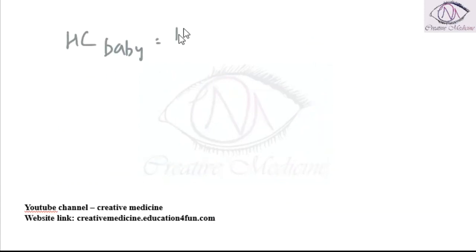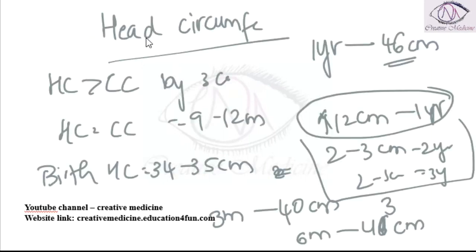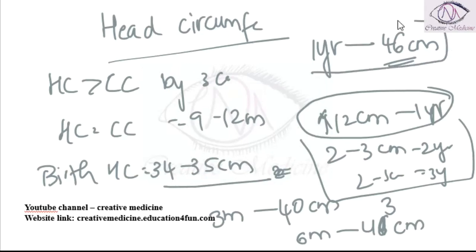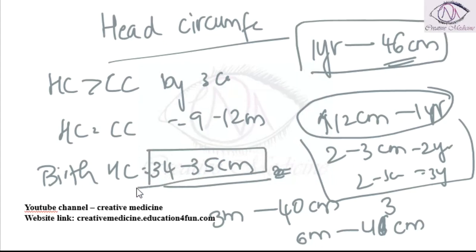Head circumference at birth is around 34 to 35 cm, and by 1 year the head circumference is 46 cm. So within the first year, there is a 12 cm increase.